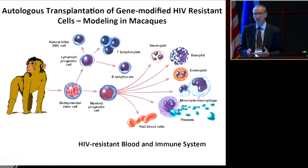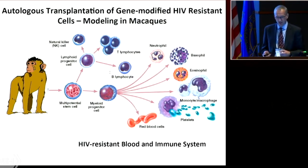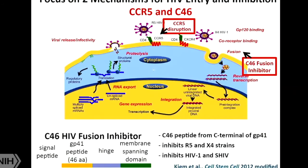We've focused on two mechanisms to inhibit HIV entry: CCR5 disruption in collaboration with Sangamo, and C46, a fusion inhibitor. Our initial studies focused on the C46 fusion inhibitor to inhibit the fusion of HIV to the cell membrane and infection of cells. This was delivered via a lentiviral vector and tested in non-human primates initially.